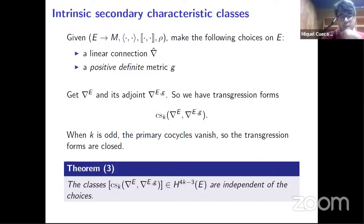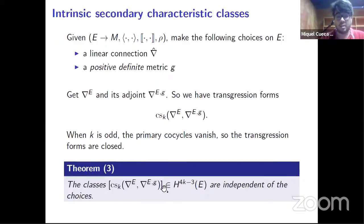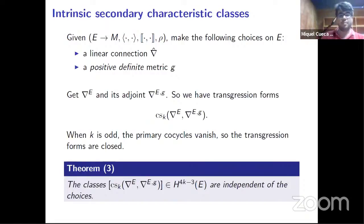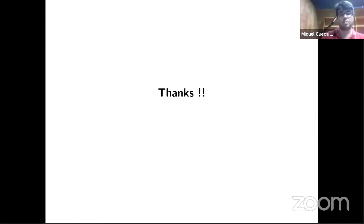To finish, we observe that for the standard current algebroid or even the twisted current algebroid, these secondary characteristic classes are zero. The first class is the modular class, appearing in degree one, and then in degrees 5, 9, and so on. In degree one it is always zero. We are not aware of any current algebroid that has non-vanishing secondary characteristic classes, but we believe some examples can be found. That's all I wanted to present — thank you very much.